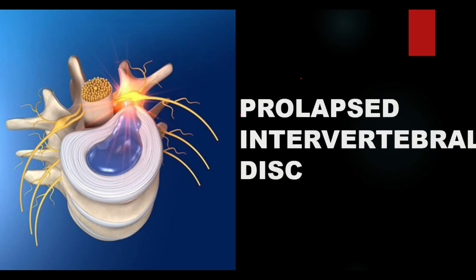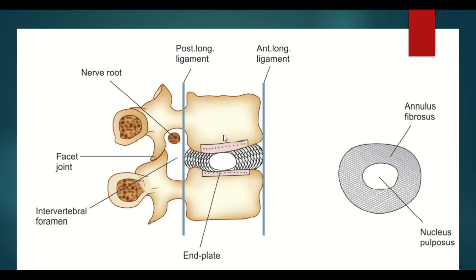Between two vertebral bodies there lies an intervertebral disc. This basically comprises three components: first, the cartilage end plate; the central part, the nucleus pulposus, which is a gelatinous material; and enclosing the nucleus pulposus is the annulus fibrosus. Here we can see the annulus fibers — this is fibrocartilaginous tissue.